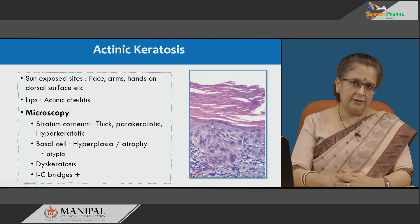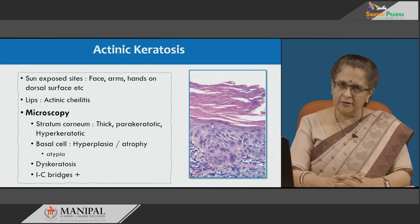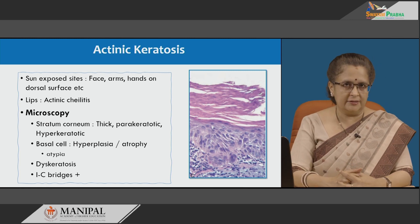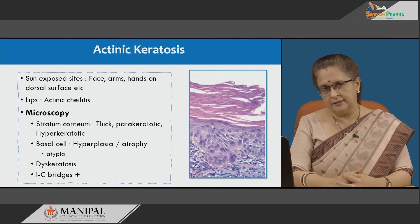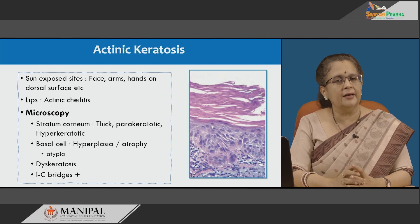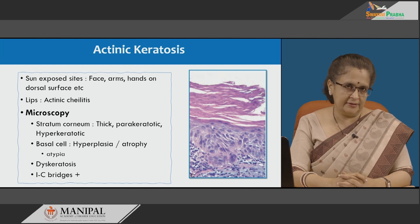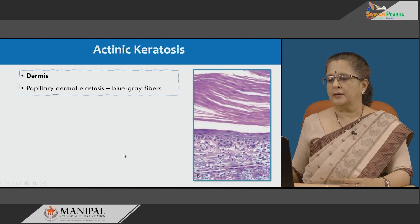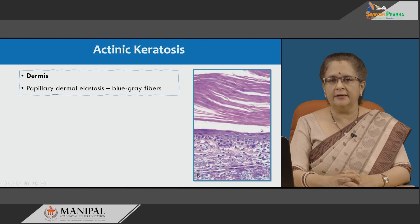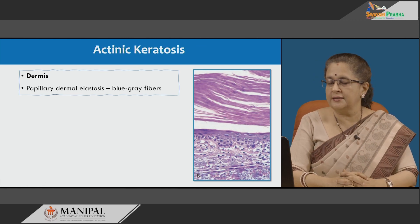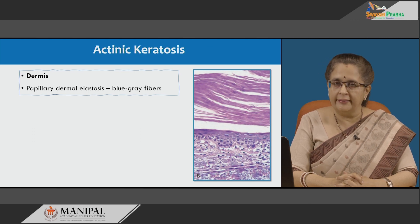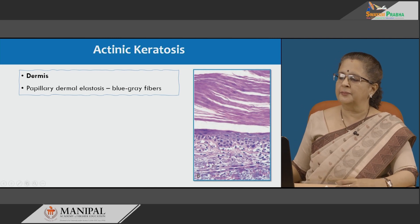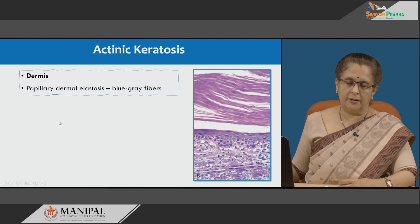Besides atypia, there can be abnormal keratinization within single cells in any layer of the epidermis, known as dyskeratosis. However, there is always preservation of intercellular ridges until it becomes an invasive malignancy — this helps differentiate actinic keratosis from basal cell carcinoma, where intercellular ridges are absent. In the dermis, a specific change secondary to sun damage occurs: damaged fibroblasts produce an abnormal form of elastin that is blue-grey, thick, and deposited in the papillary dermis — this is known as papillary dermal elastosis.